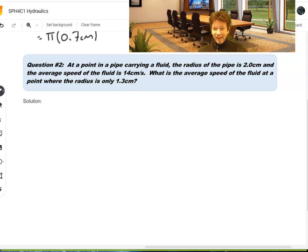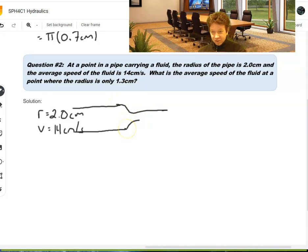All right, question two, which looks at the continuity principle. At a point in a pipe carrying a fluid, the radius is 2 centimeters. And the average speed is 14 centimeters per second. So, let's sort of draw that. We have a radius of a pipe. R equals 2 centimeters. And the speed is 14 centimeters per second. What is the average speed of the fluid at a point where the radius is only 1.3? So, this pipe sort of does this. Now, we know it speeds up, but let's confirm that with the equation. So, in this case, our new R, let's call it R2, equals 1.3 centimeters. And we want to figure out what V2 is.